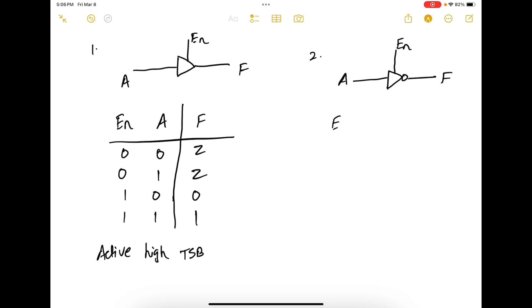So the truth table is, enable A and F. Enable 0: 0, 0, 1, 1. And 1: 0, 1, 1.